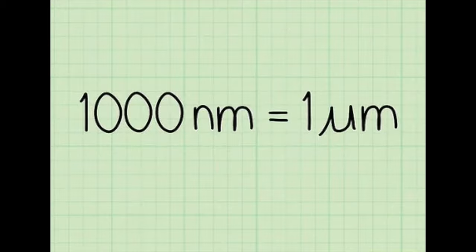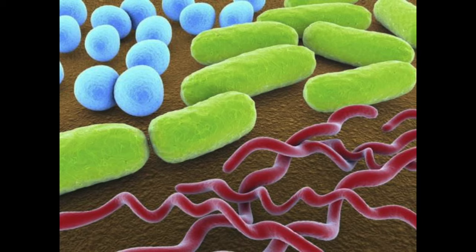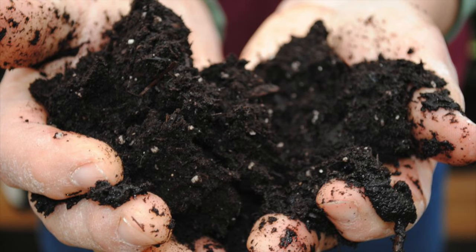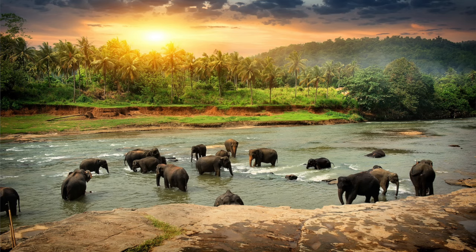Next up, let's take a look at bacteria. Bacteria are microorganisms of just a few micrometers, which already makes them a thousand times bigger than the biggest virus. Bacteria exist in many shapes and forms like rods, spirals, cones, and many more. They are everywhere — there are about 40 million bacteria in just one gram of soil. And if you would add up all the bacteria on Earth, they would weigh more than all plants and animals combined.